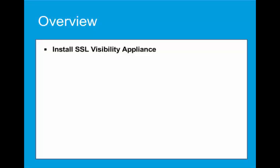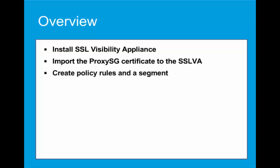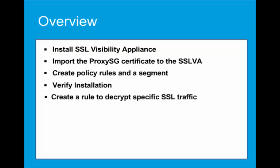We will perform the following activities to complete the configuration. First, we will install the SSLV appliance in the network. Then export the ProxySG certificate and private key, and import them on the SSLVA. Create a basic rule set and then a segment for active inline mode. At this point, we will run a test to verify that no traffic is being blocked by the SSL Visibility Appliance. Then create a rule to decrypt specific SSL traffic and test this rule, verifying the traffic is decrypted.